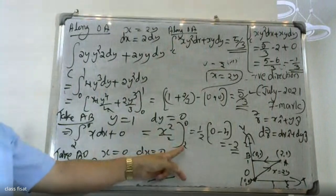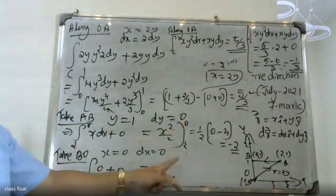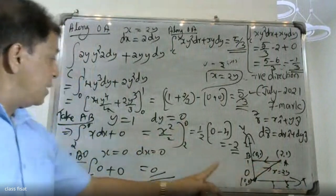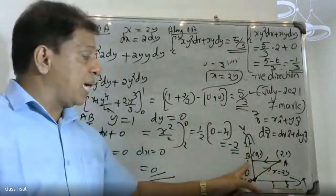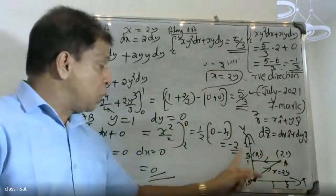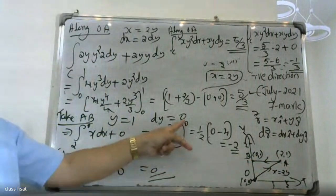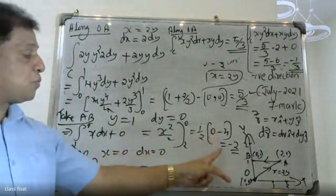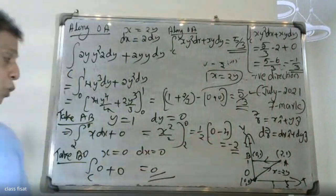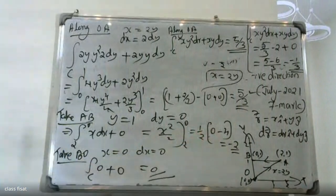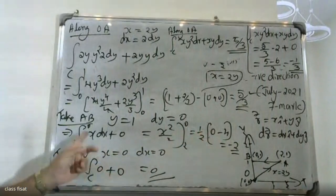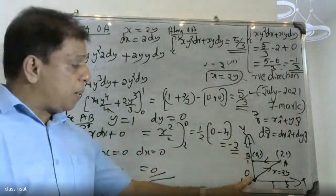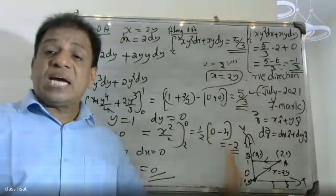With x squared, the lower limit to upper limit evaluates to 2 to 0. The answer for path AB is minus 2. For path BO along the y-axis, x equals 0.